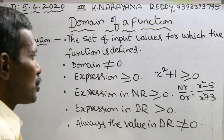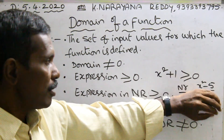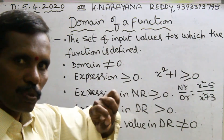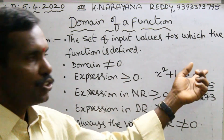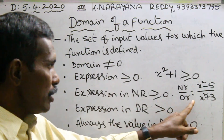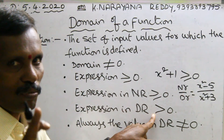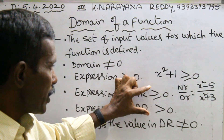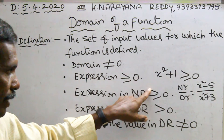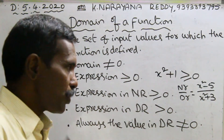Numerator always greater than or equal to zero. If zero is in the numerator — zero divided by some number is zero — that is suitable. But in the denominator, not equals to zero, only greater than zero. That is the important point: the difference between numerator and denominator. Numerator greater than or equal to zero, and denominator greater than zero.